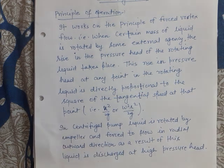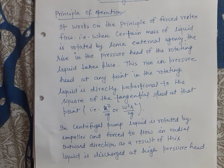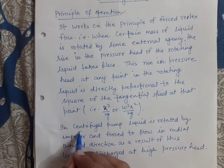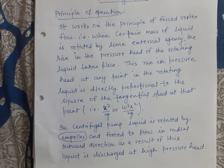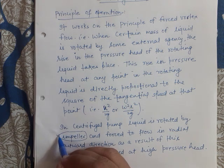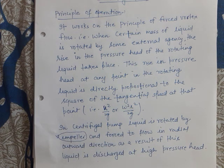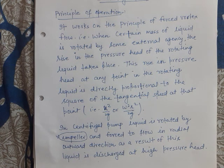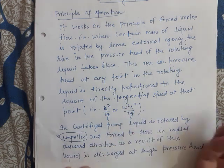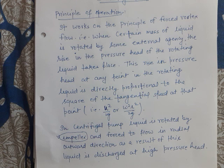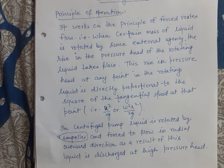In a centrifugal pump, the liquid is rotated by a rotating element known as the impeller. The liquid is forced to flow in the radial outward direction by the impeller. As a result, the liquid is discharged at a higher pressure head, because as the radius increases the pressure head also increases.